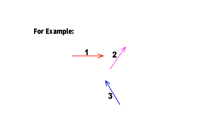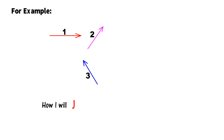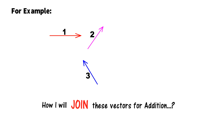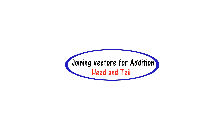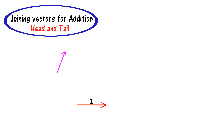For example, if I have three vectors — vector 1, vector 2, and vector 3 — and I want to add them, I will first join these vectors for addition. Here is the trick: the head and tail trick. I will take the first vector, then take the second vector and join the tail of the second vector with the head of the first vector.